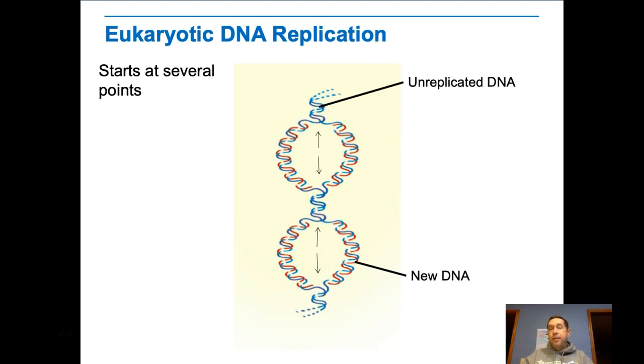Eukaryotes, because they have the linear chromosomes and there's more than one, to get the DNA copied quickly enough to allow things to happen when they need to, there are several origins of replication. Replication starts on several different points along each chromosome. So there's going to be multiple replication forks within that chromosome as the replication process occurs.